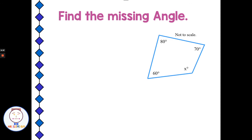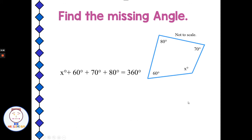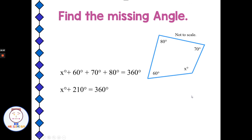We have a four-sided quadrilateral, and we know the interior angles of every quadrilateral add up to 360 degrees. In this one, we have three known measures — 60, 80, and 70 degrees — and one unknown. We can write the equation: x plus 60 plus 70 plus 80 equals 360. Sixty plus 70 plus 80 is 210, so subtracting 210 from each side gives x equals 150 degrees.